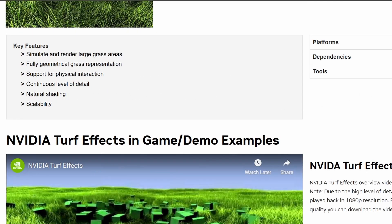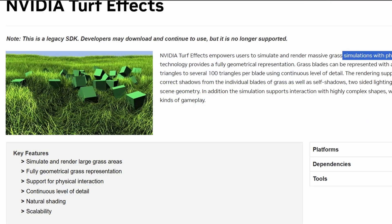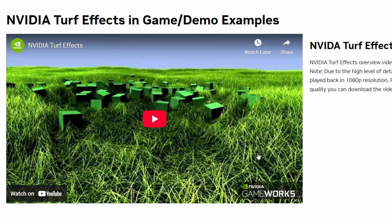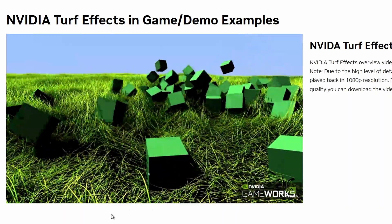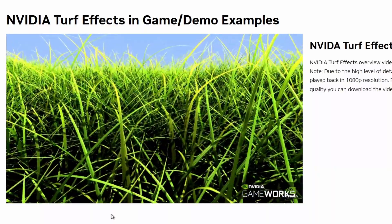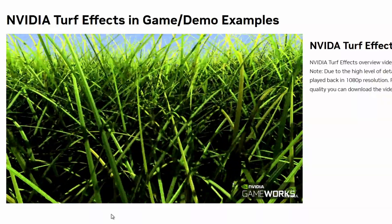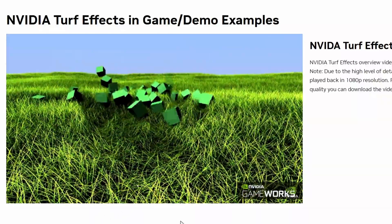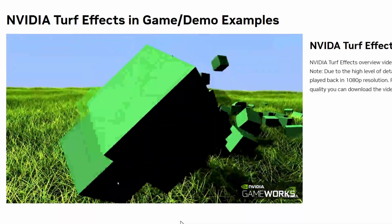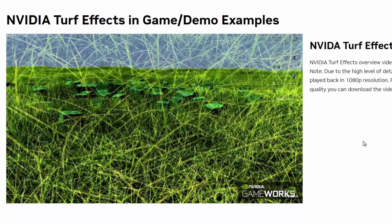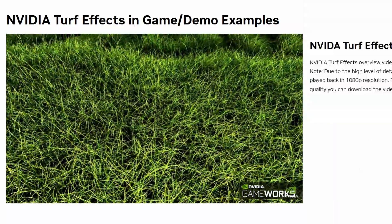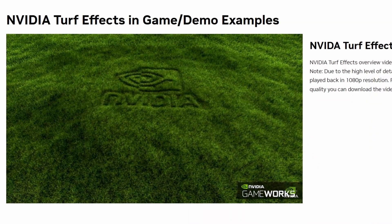And then you go even further ahead to DirectX 11 with Turf Effects, which enables massive grass simulations and physical interactions — like the Crysis-style interaction where you can move through the grass and bend it as your character goes through it. 100 triangles per blade using continuous level of detail, natural shading with correct shadows from individual blades, and self-shadows. This is part of NVIDIA GameWorks. Physics can interact with the grass — I think this is the tech they had in Ghost Recon Wildlands in 2017, where you could flatten the grass as you walked over it. Very conceptually similar to the grass demo, but way more advanced.